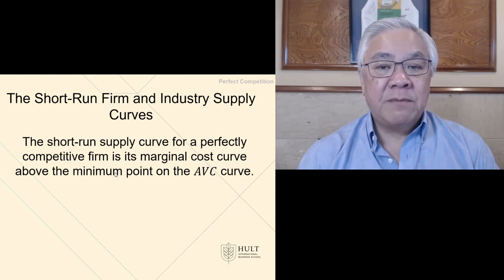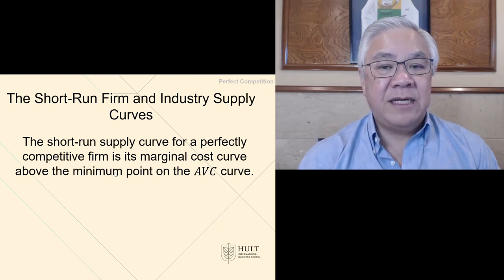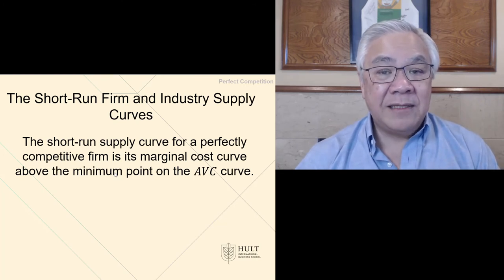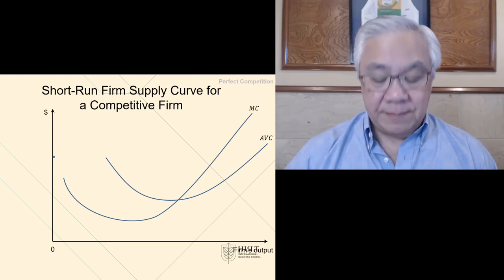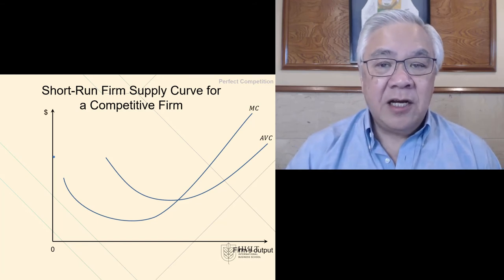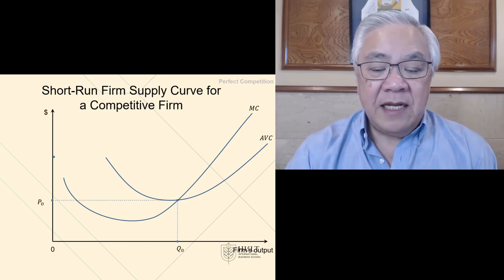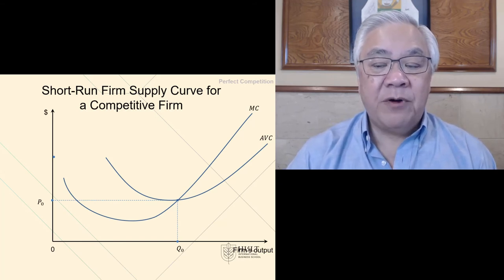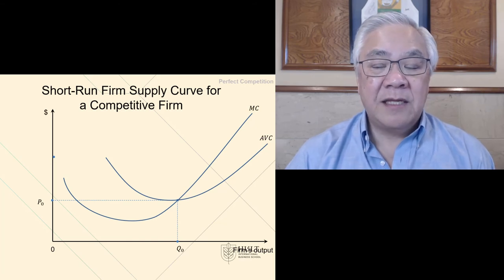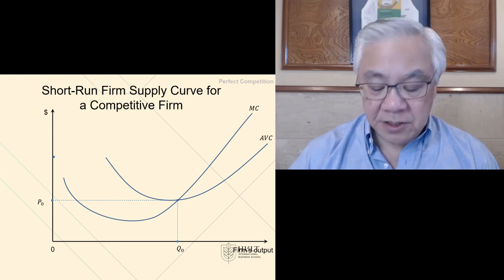Now we can look at a short run firm's decisions and how that aggregates into industry supply curve. This is going to look fairly similar to what we did previously with aggregating demand. Now let's derive an individual firm's supply curve. At what quantities would they be willing to supply and where does it end? Let's say this is the cost faced by a firm. They have marginal and average cost functions as follows.